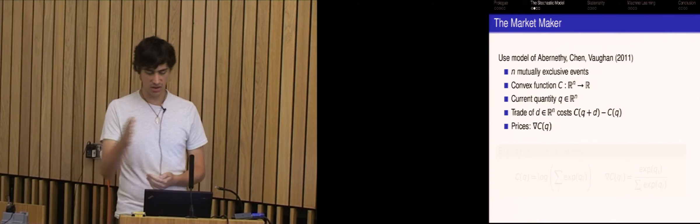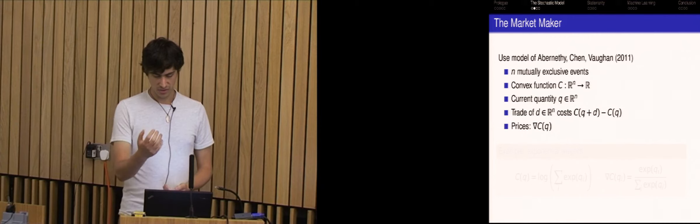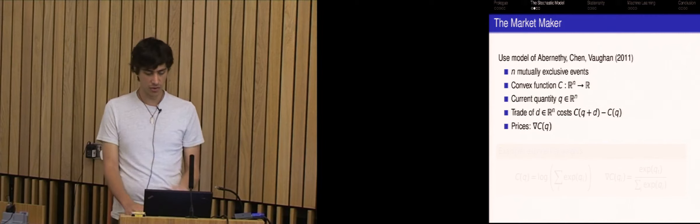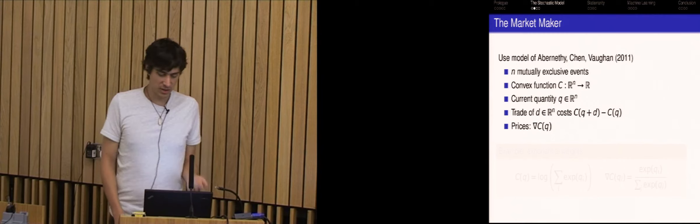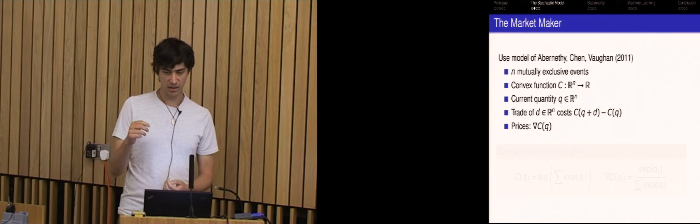And we're going to use an automated market maker. So our model is the model of Abernathy, Chen and Vaughan in 2011. So I'll briefly go over this again, for those of you who are at the tutorial is probably much clearer then. So we'll just look at N mutually exclusive events. And you have some convex cost function C which is going to determine the prices. And you're going to keep track of the market maker, keep tracks of the total number of contracts that have been sold in each, for each outcome. And I'll call that Q.